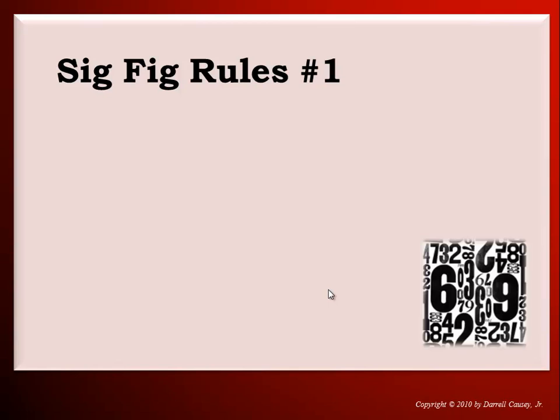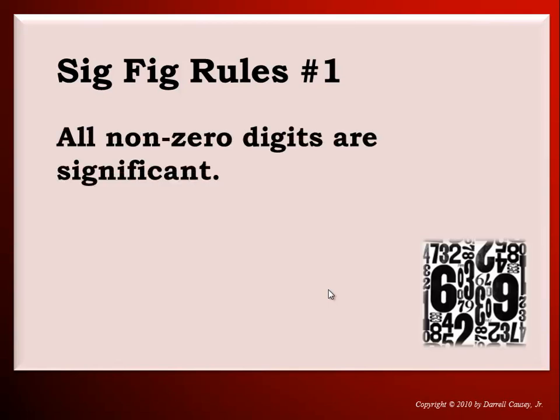So, some significant figure rules. The first rule is that all non-zero digits are significant — that means one through nine are all significant. The only digit that we question for significance is the zero. That's not to mean the zero isn't important — just because we say a zero is not significant doesn't mean it doesn't have a job. Always remember: the zero is a placeholder, and a lot of times it needs to hold the place so that we can show the place value of the other digits.